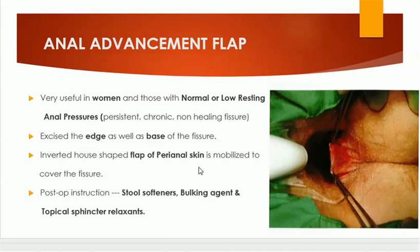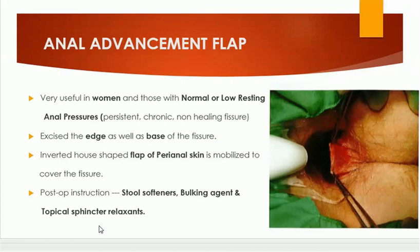After fissurectomy, that area is covered with a local advancement flap of the perianal skin. Postoperatively, these patients are advised stool softeners, bulking agents, and topical sphincter relaxants. This is another technique to treat chronic anal fissure using anal advancement flaps.